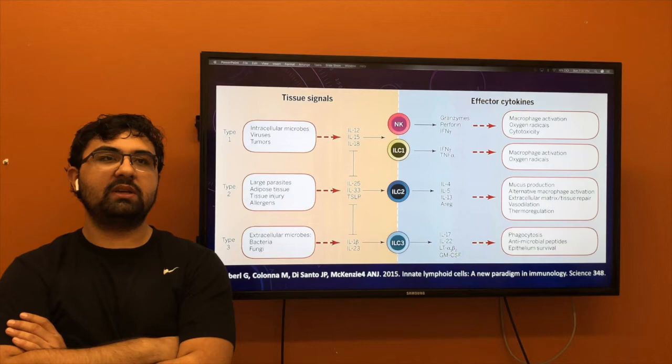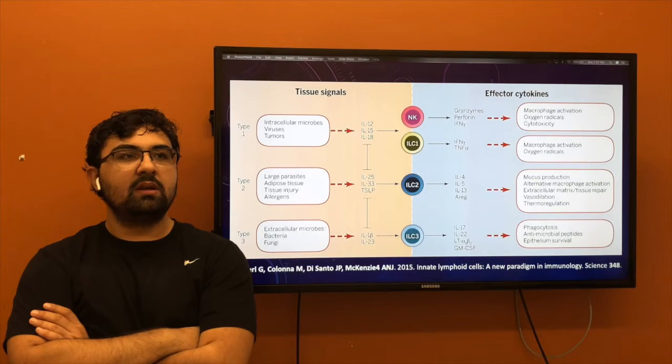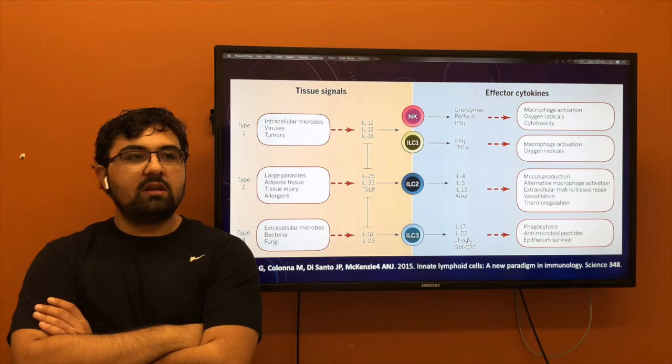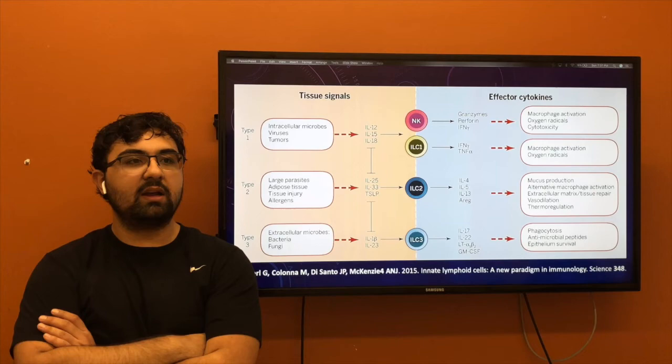ILC1s protect against intracellular pathogens. They promote innate immunity to intracellular pathogens by producing TNF gamma and TNF and INF alpha. Whereas ILC2s protect against extracellular pathogens, where they promote innate immunity to large parasites. And then lastly, ILC3s protect against extracellular bacteria and fungi by promoting innate immunity to fungi and extracellular bacteria by limiting replication, dissemination, and tissue damage caused by pathogenic opportunistic bacteria.